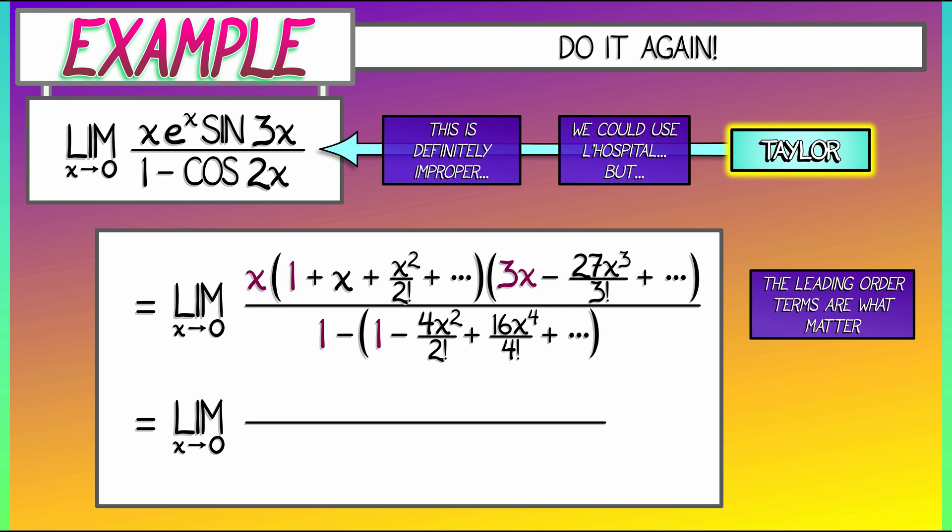limit as x goes to 0 of, in the numerator, a polynomial that begins with 3x squared. In the denominator, a polynomial that begins with 2x squared. Factoring out an x squared from all these terms, canceling top and bottom, evaluating at x equals 0 leaves me with the answer 3 halves.